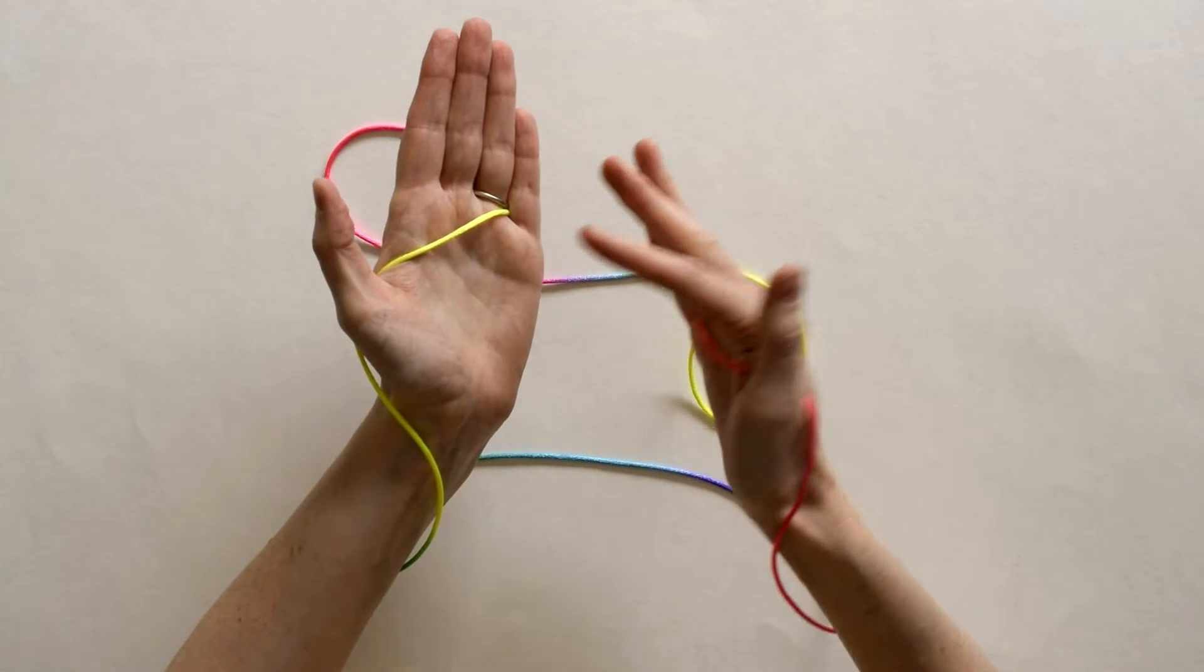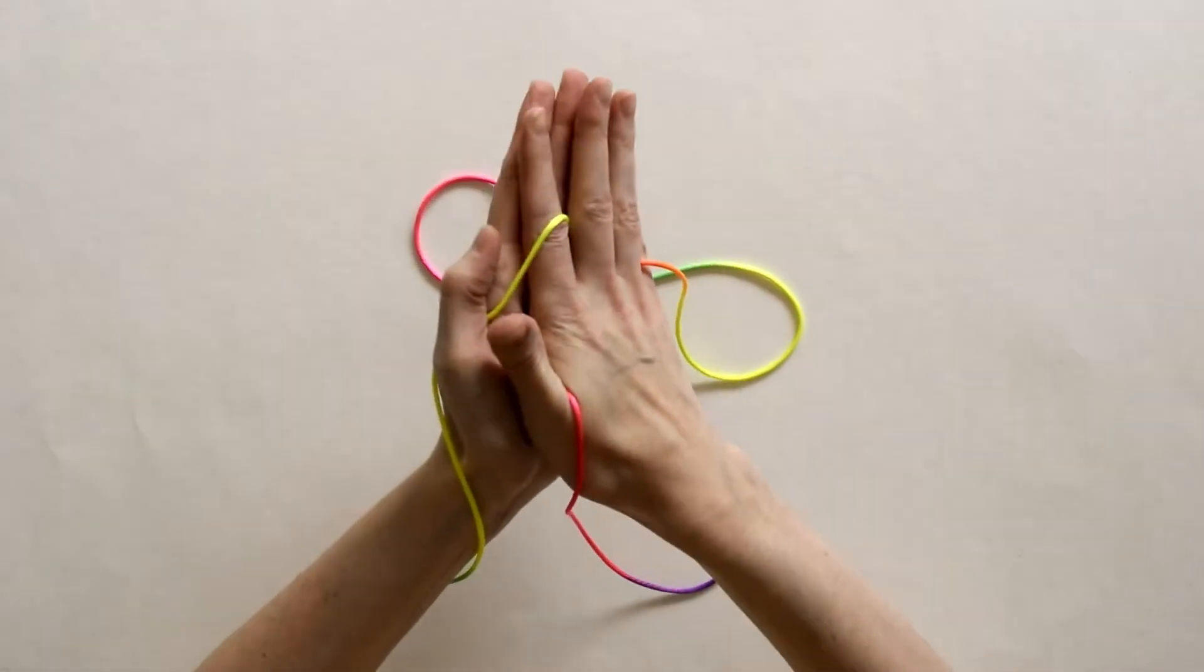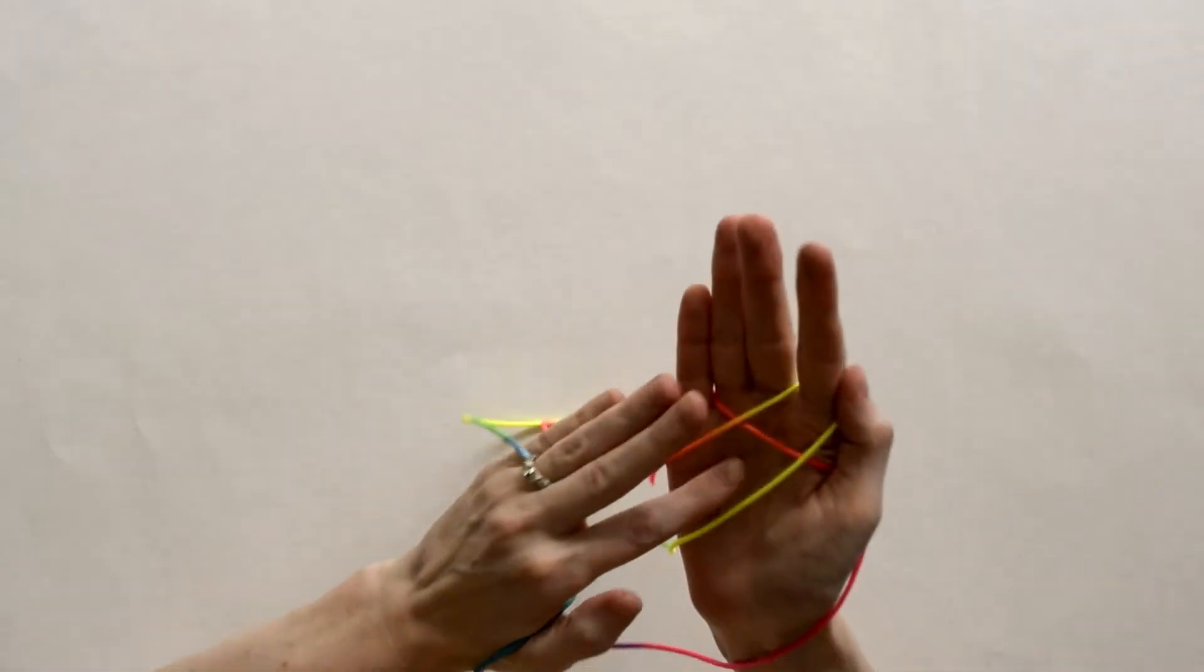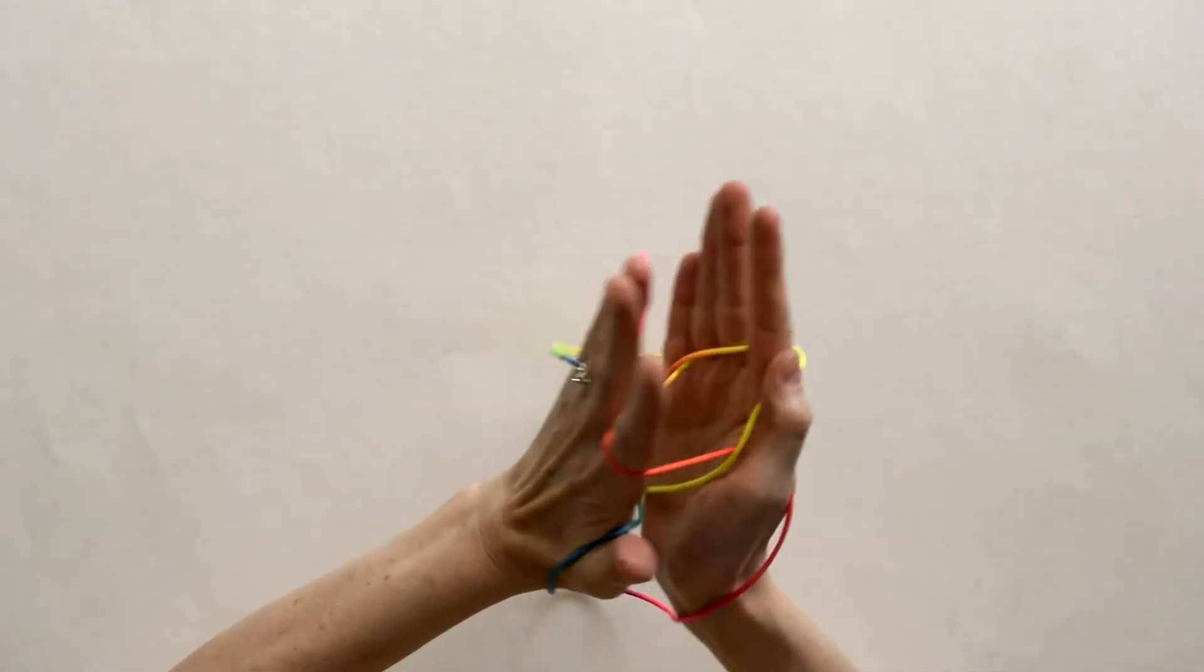Next take your right index finger, go onto your palm from below, and pull back on that left palm loop. Take your left index, go under the right palm, and pull back.